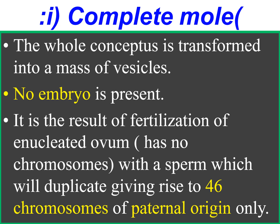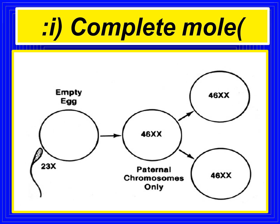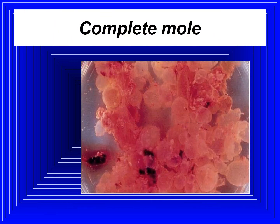Vesicular mole is classified into complete mole and partial mole. In complete mole, the whole conceptus is transformed into a mass of vesicles — no embryo or fetal tissue is present. It results from fertilization of an enucleated ovum by a sperm, which duplicates to give rise to 46 chromosomes of paternal origin only. The chromosomal pattern is 46XX, all of paternal origin, as shown in the ultrasound image.